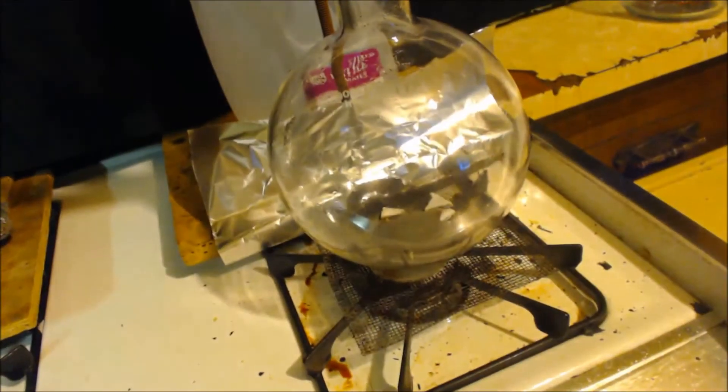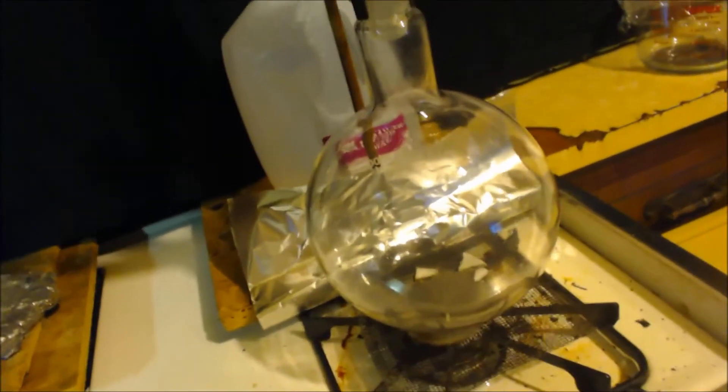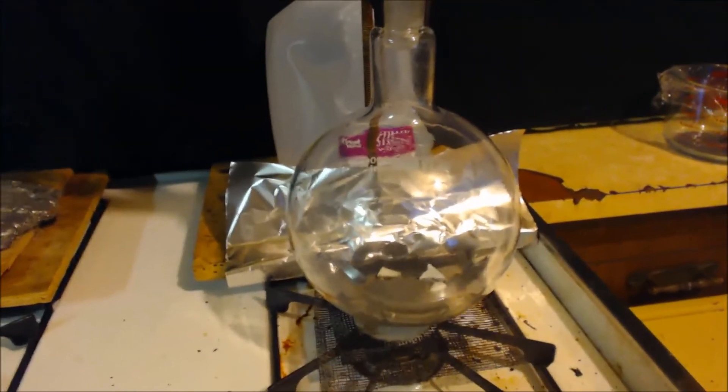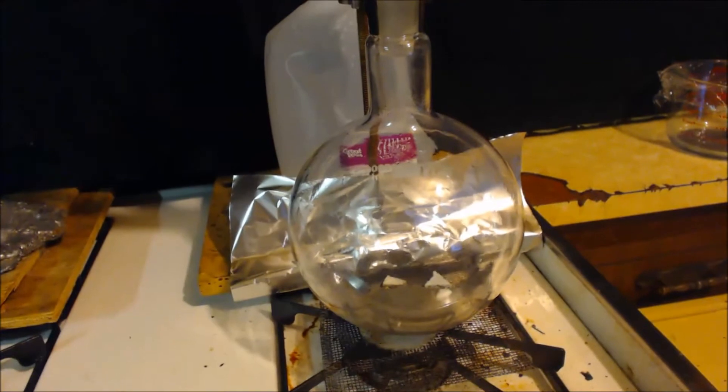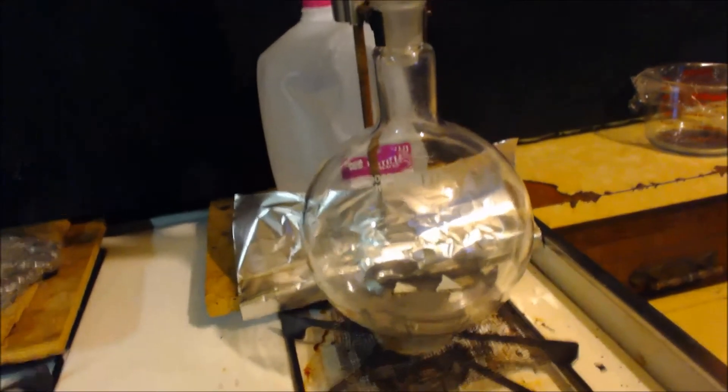And then here I've got a Vigreux column and a condenser. And up on the top, I've got a little thing here just so it can vent. Oh, I better open the valve. So it can only come out that little hole there. It's overkill, I admit, but I'm just going to drip it in. We'll see what happens. This one though, I figure I've got to recrystallize it, so I'm going to add like 150 milliliters of water, maybe 100 milliliters or something like that.